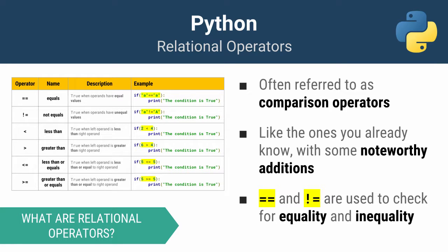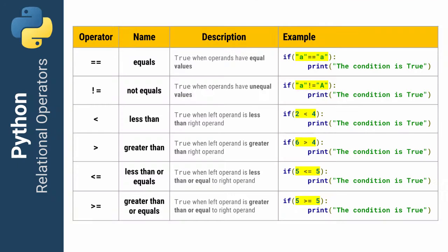There are six different relational operators that I want you to know. Relational operators are called comparison operators because they compare values and check for the relationships between them. You are used to the greater than and less than symbols, but there's a couple noteworthy additions — namely, an equality and inequality comparison operator. The six are: equal to, not equal, less than, greater than, less than or equals, and greater than or equals.